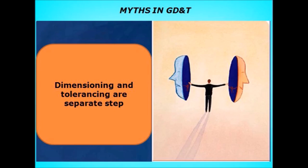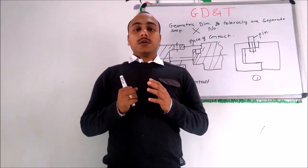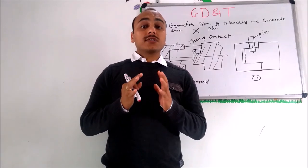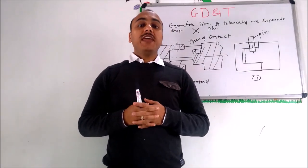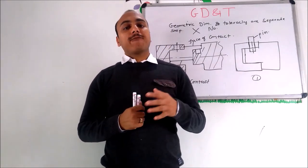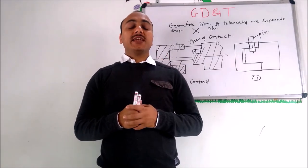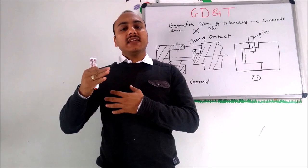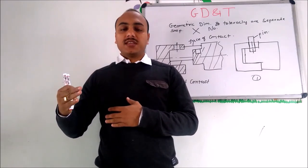Let's discuss various myths in GD&T. The first myth is that dimensioning and tolerancing are separate steps. This is incorrect — geometric dimensioning and tolerancing are not separate steps. We have to be careful while dimensioning in a drawing because it is going to affect the tolerancing values and system.